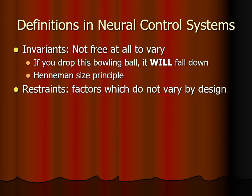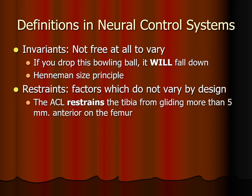The next thing are restraints — factors which do not vary by design, and usually there are consequences when they do vary. For example, the ACL restraints the tibia from gliding more than five millimeters anteriorly on the femur. When the tibia does glide more than five millimeters anteriorly on the femur, there are usually pretty severe consequences in terms of ACL insufficiency or the ACL rupturing.